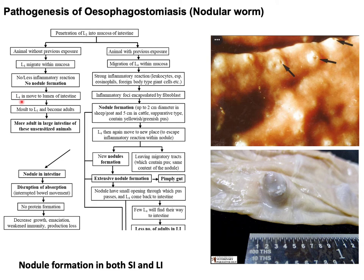In animals without previous exposure, the L4 finds its way to the intestinal lumen, where molting from L4 to L5 occurs and the larvae become adult parasites. The key point in this scenario is that there is no nodule formation in the intestinal wall, but more adult worms are found in the lumen of the large intestine.